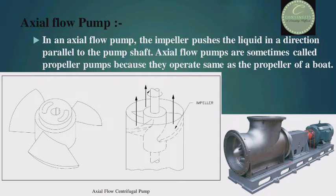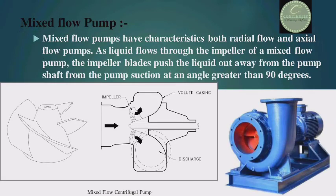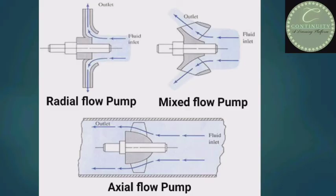Now, the mixed flow pump. Mixed flow pumps have characteristics of both radial flow and axial flow pumps. As liquid flows through the impeller, the impeller blades push the liquid out away from the pump shaft at an angle greater than 90 degrees. In the picture, you can see that liquid is being discharged partially in the axial direction and partially in the radial direction — that is why it is called a mixed flow pump.